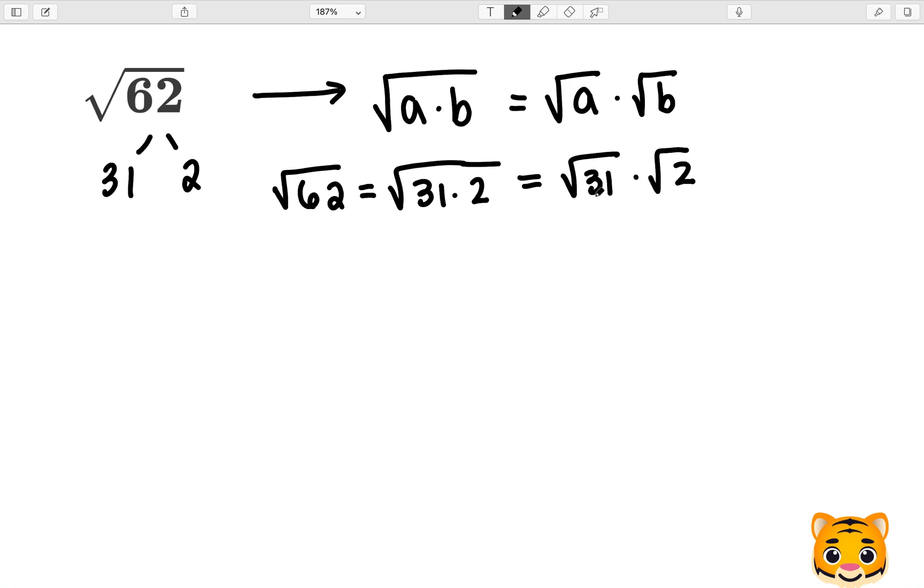Unfortunately, neither 31 nor 2 is a perfect square, so this would be our final answer. And this doesn't give us a great solution, so we need to come up with a better estimation.